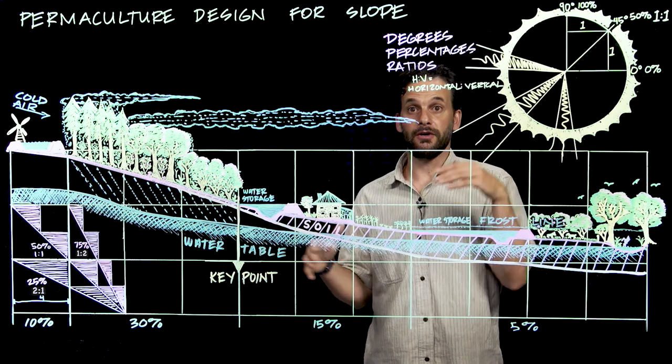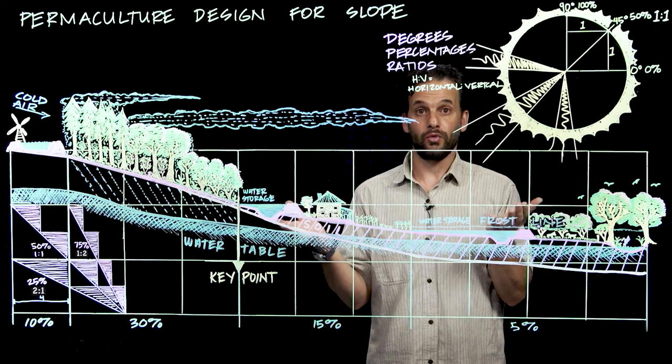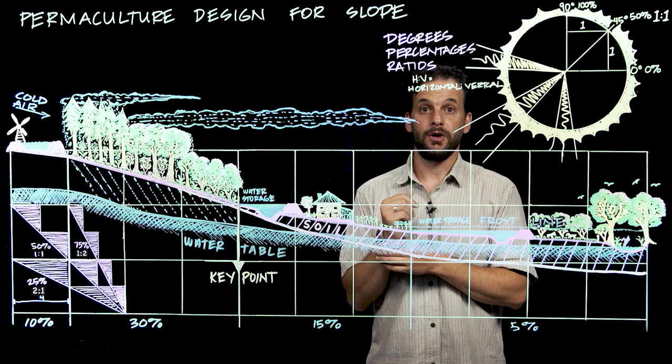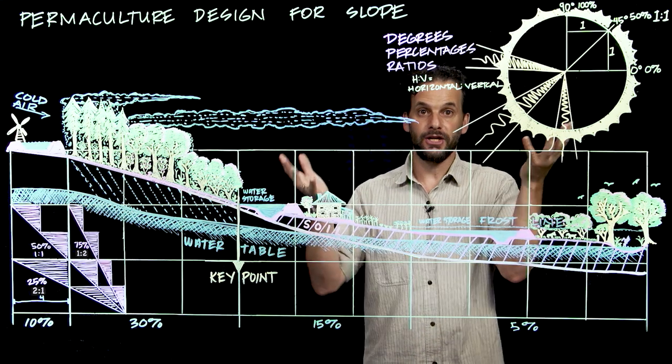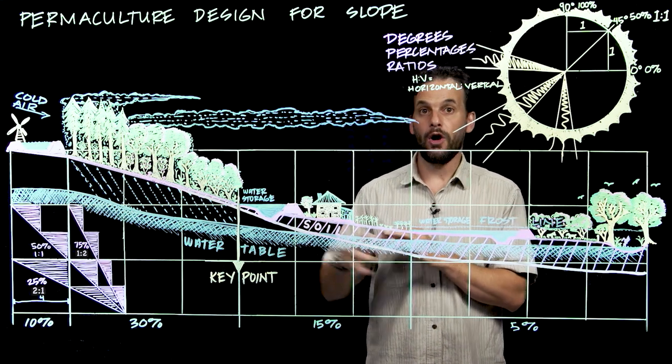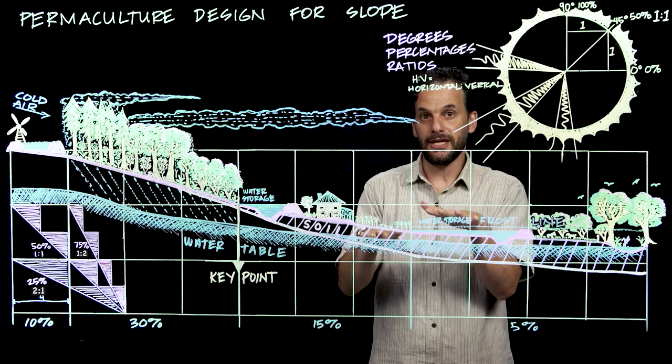Now I know of farms in more arid climates that intentionally site themselves on the north slope, this is in the northern hemisphere, in order to have more assured water supply running off of a north-facing slope where there's less warmth and evaporation from the sun, and more water flowing downslope and soaking into the water table.